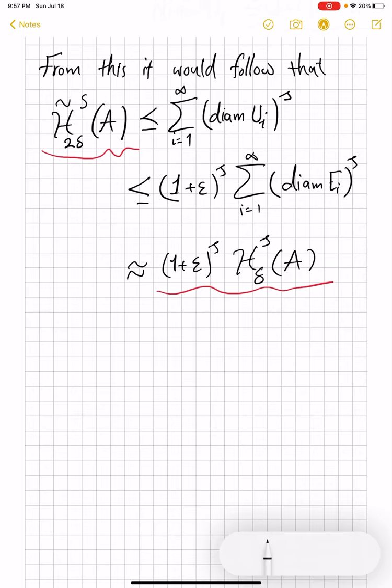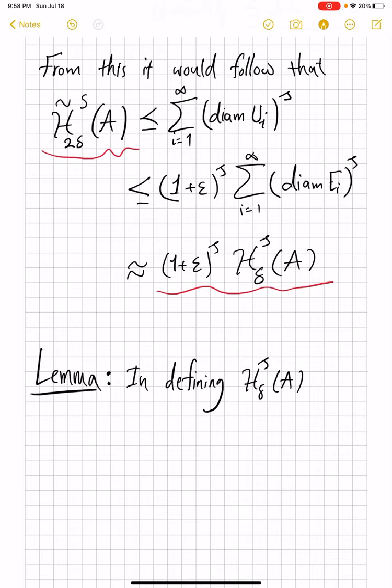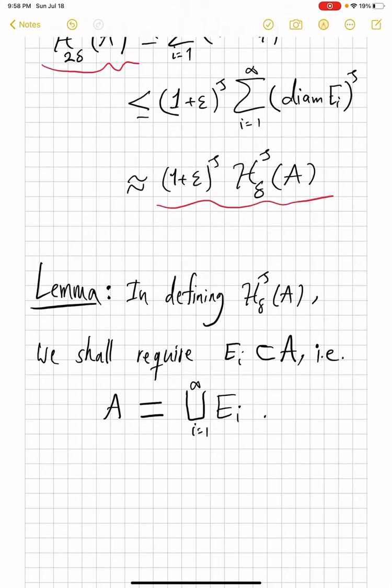So the final lemma for this video will be that, and that will be super easy without a proof, is that in defining H^s_δ of A, similarly in H^s(A) as a consequence, we shall require E_i to be also subsets of A. So usually in the usual definition, A is covered by union of E_i's, but now we're saying that E_i's themselves not cover anything outside A. Why would we want to waste some coverage? Right, so that this becomes equality. And that means instead of really coverings, you're doing partitions of your set. So to convince yourself of why this is true, probably the following picture will suffice.